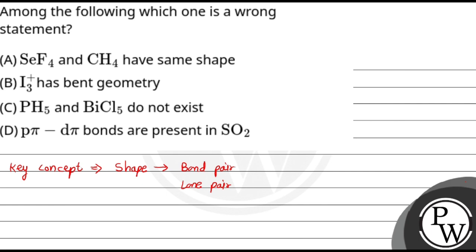Second, I3+ is bent geometry. Bent geometry means that you have a central atom and side atoms similar to V shape. Third, PH5 and BiCl5 do not exist. And fourth, p-pi d-pi bonds are present in SO2. So one by one, we take options and start to solve.